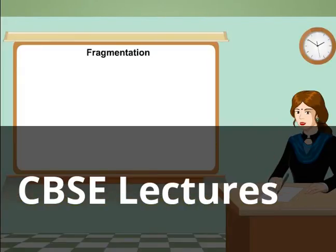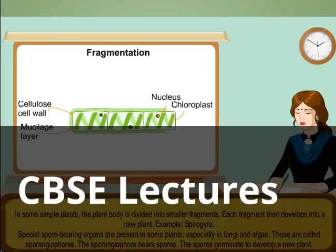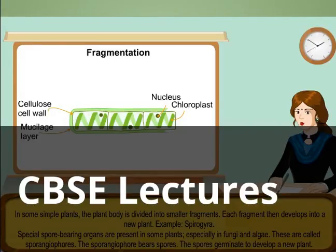Fragmentation. In some simple plants, the plant body is divided into smaller fragments. Each fragment then develops into a new plant. An example of this is Spirogyra.